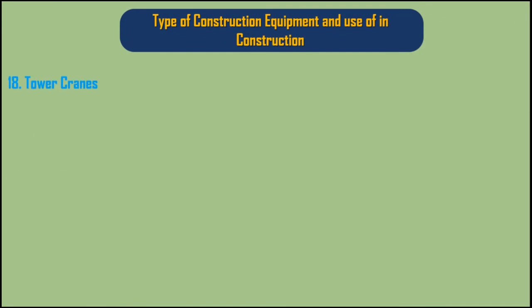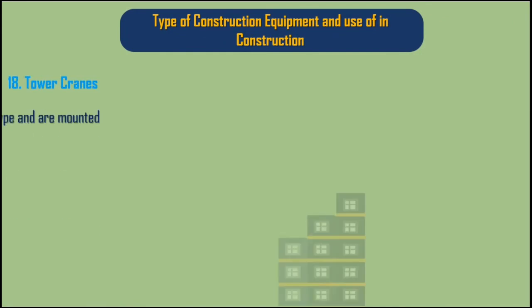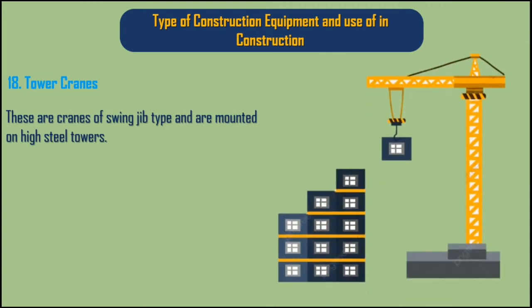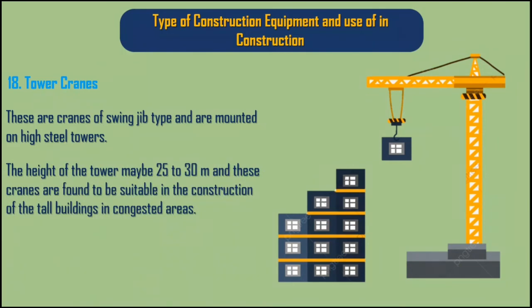18. Tower Cranes. These are cranes of swing jib type and are mounted on high steel towers. The height of the tower may be 25 to 30 meters and these cranes are found to be suitable in the construction of tall buildings in congested areas.